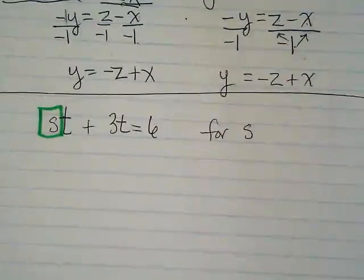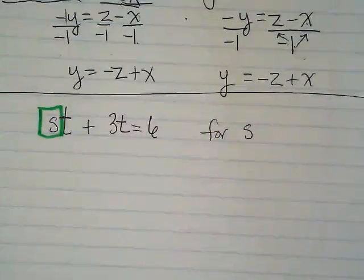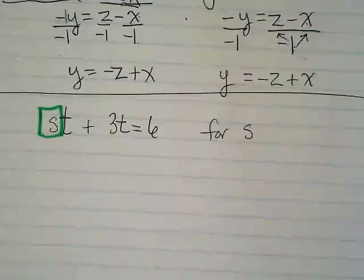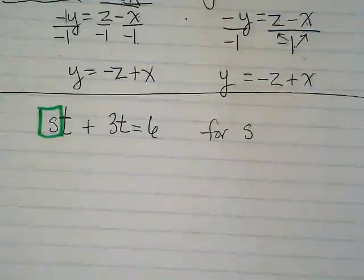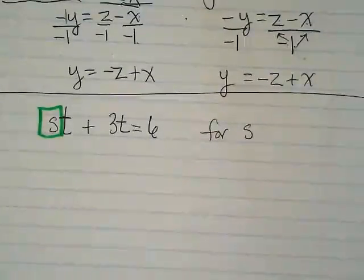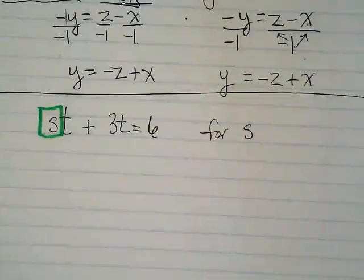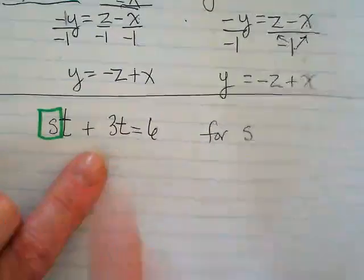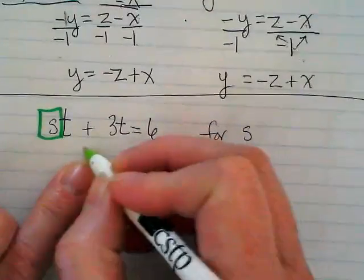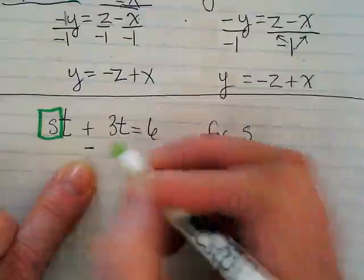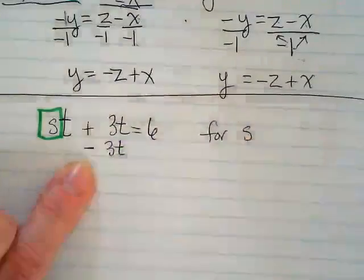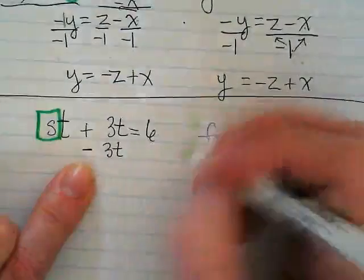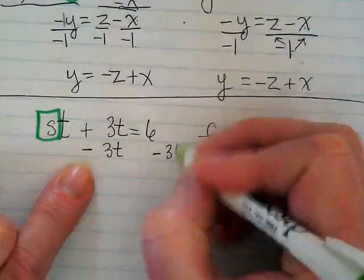When you're thinking about these equations, remember the whole idea of whatever I do to one side, I also have to do to the other side. But it's kind of like I'm just playing with pieces of this equation until I move them out of the way and get the one thing I want by itself. And I can move this 3T by doing what? Minus 3T. But I have to do it to the other side as well.